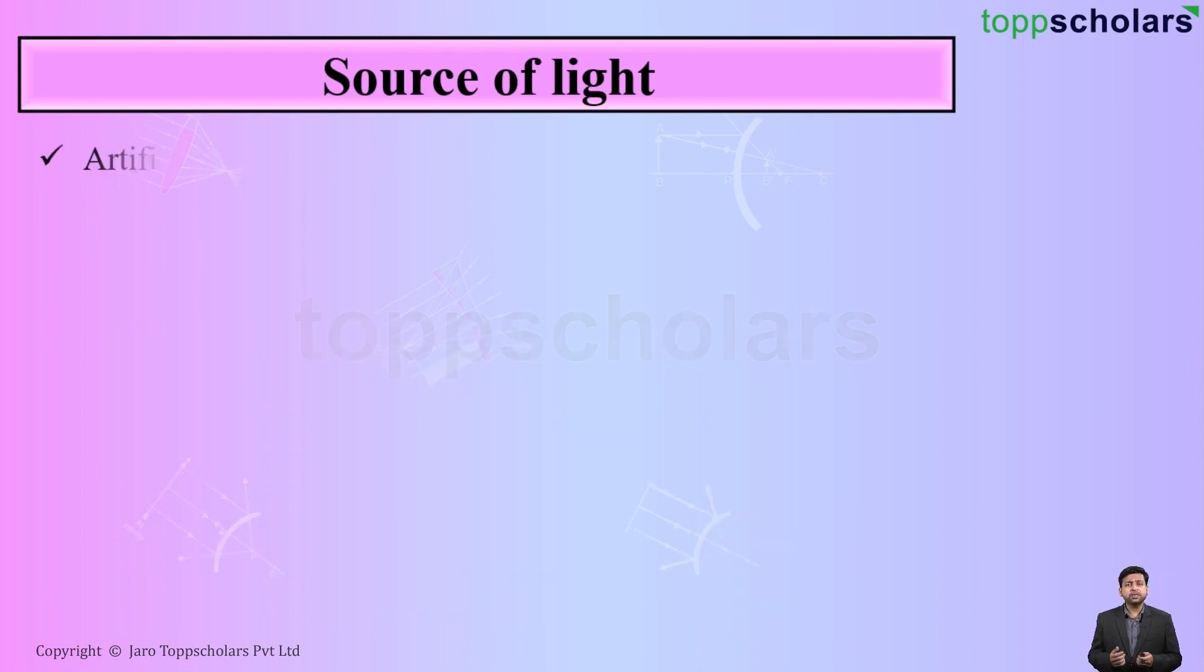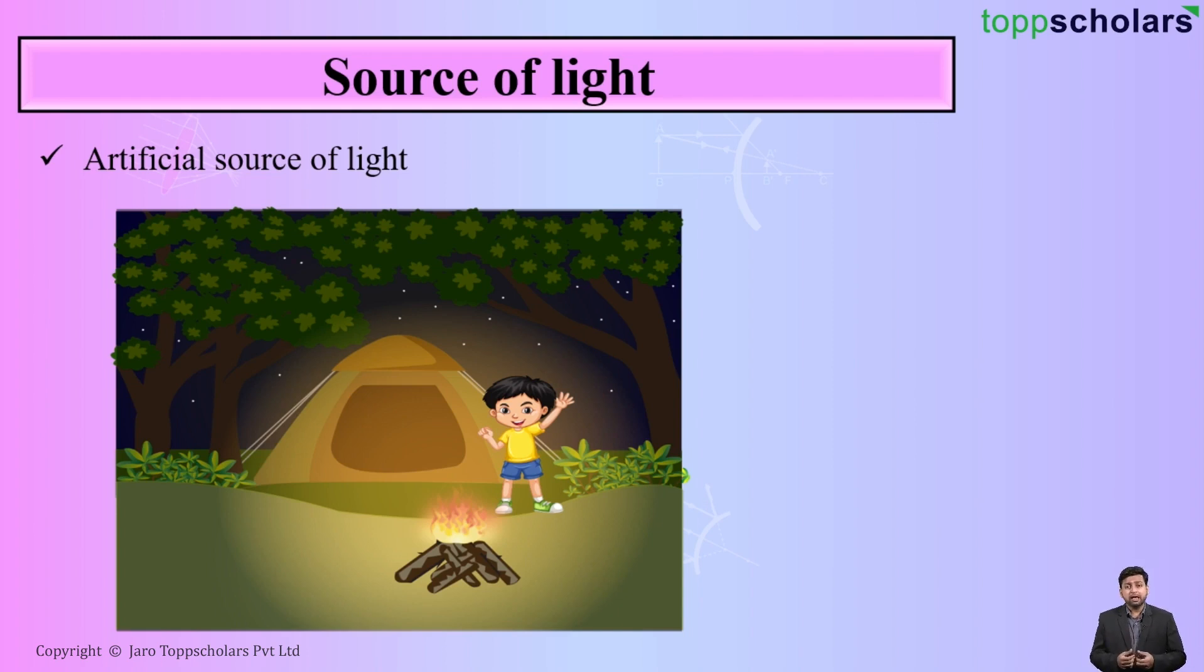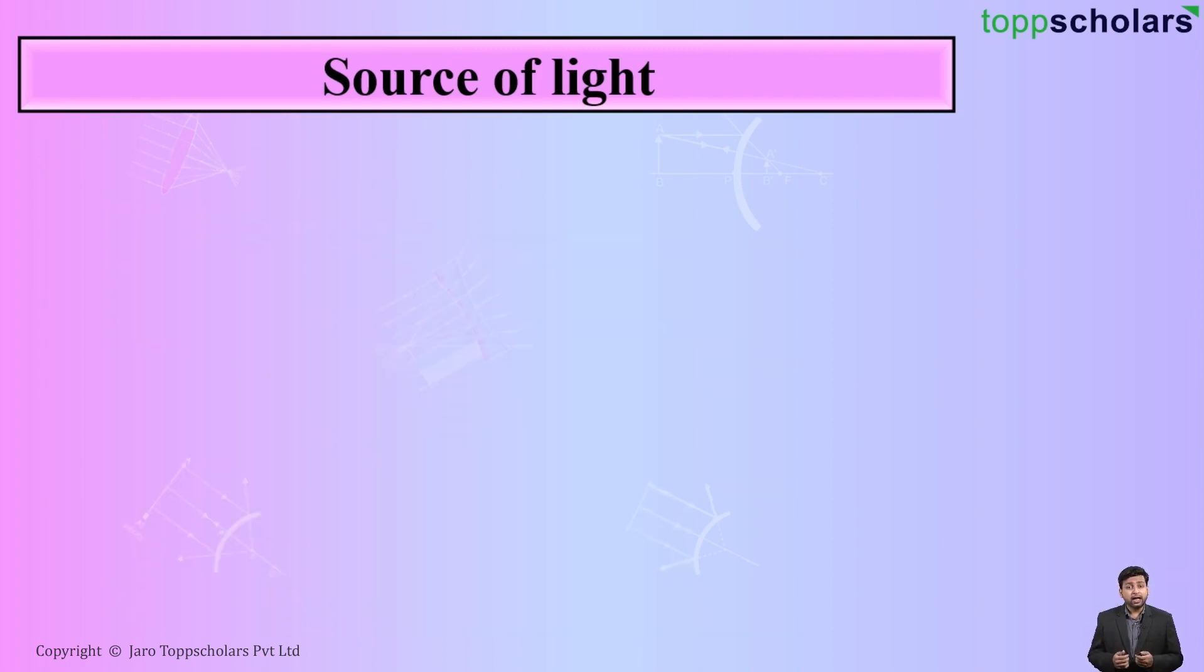Now let us talk about the artificial source of light. The artificial source of light, for example, if I am burning a wood, a bonfire, that is nothing but the artificial source of light. Another example of artificial source of light is candle. When there is no light, you burn or you ignite a candle. So that is example of artificial source of light.